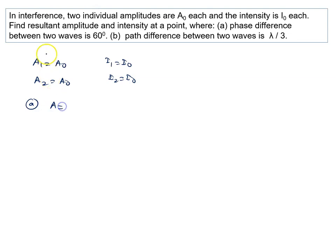Resultant amplitude is given by, when both amplitudes are identical, 2A0 cos(θ/2). So it is 2A0 cos(60°/2), which is cos 30°. So it is 2A0 times root 3 by 2, which gives us A0 root 3.